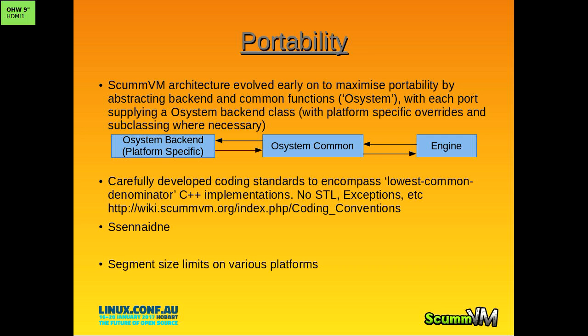ScummVM was originally written in plain C as a reimplementation of the engine. Then Ludd came in with an engine implementation for Simon the Sorcerer. As SCUM progressed, we realized we needed C++ functionality - we needed inheritance because reimplementing things that differed very slightly between various engine versions was a lot of duplicated effort. However, with the portability goal in mind, C++ is not necessarily the best option, so we have some very strict coding conventions.